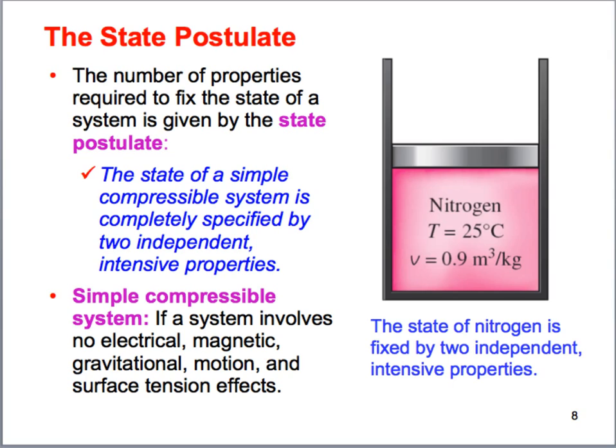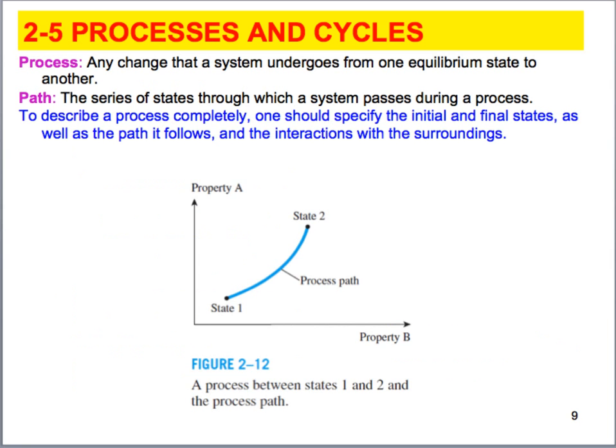The state postulate. The state postulate is something that we need in order to fix the state of a system. In this case, the state of a simple compressible system is specified by two intensive properties. In this case, we have temperature and we have specific volume. I should also mention what I mean by simple. Simple means it involves no magnetic gravitational motion and surface tension effects.